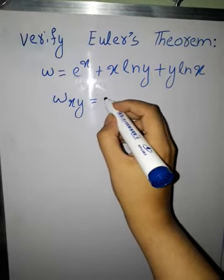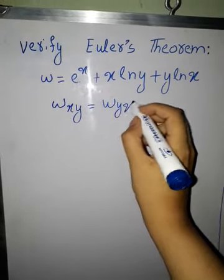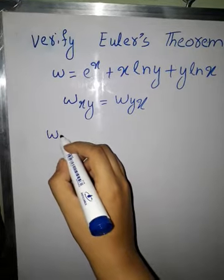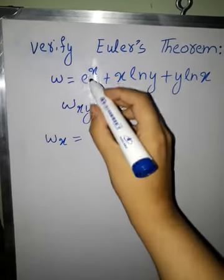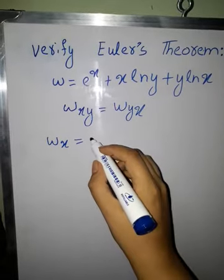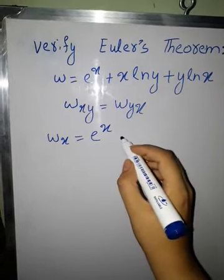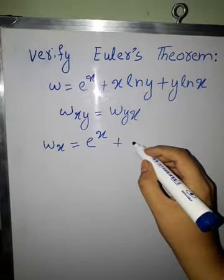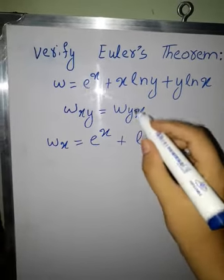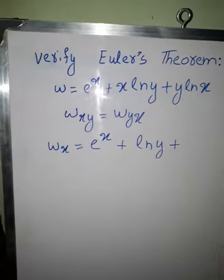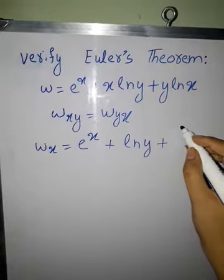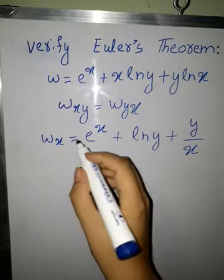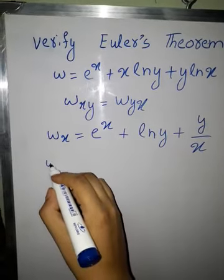Let us first find the partial derivative of w with respect to x. The derivative of e^x with respect to x is e^x, plus the derivative of x·ln(y) with respect to x is ln(y) times 1, plus the derivative of y·ln(x) with respect to x is y divided by x.